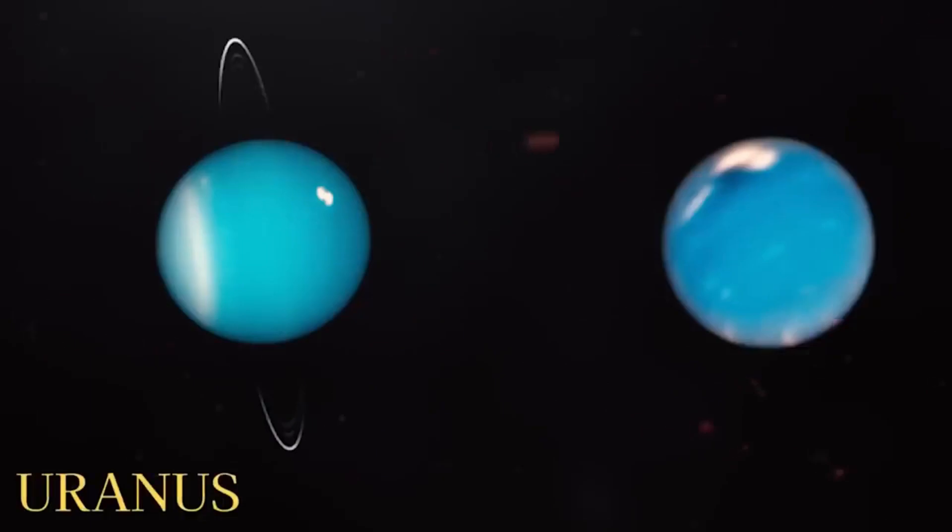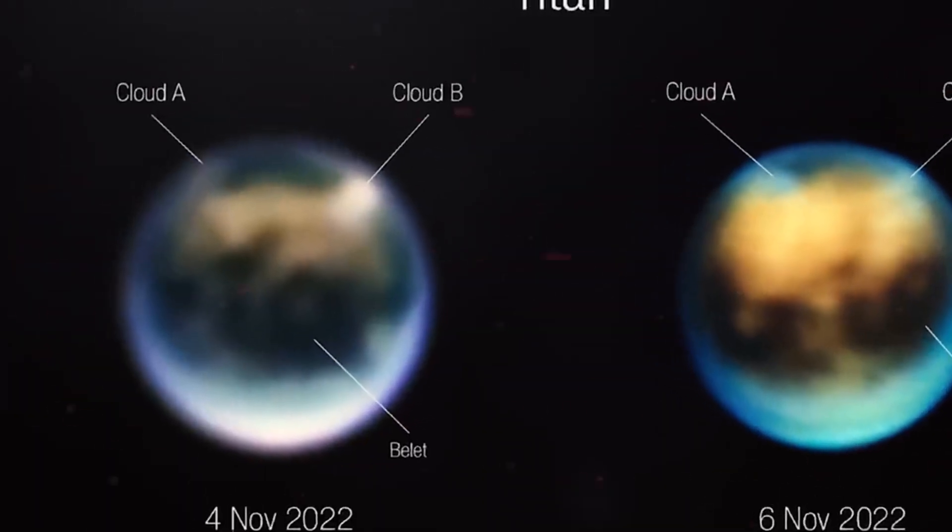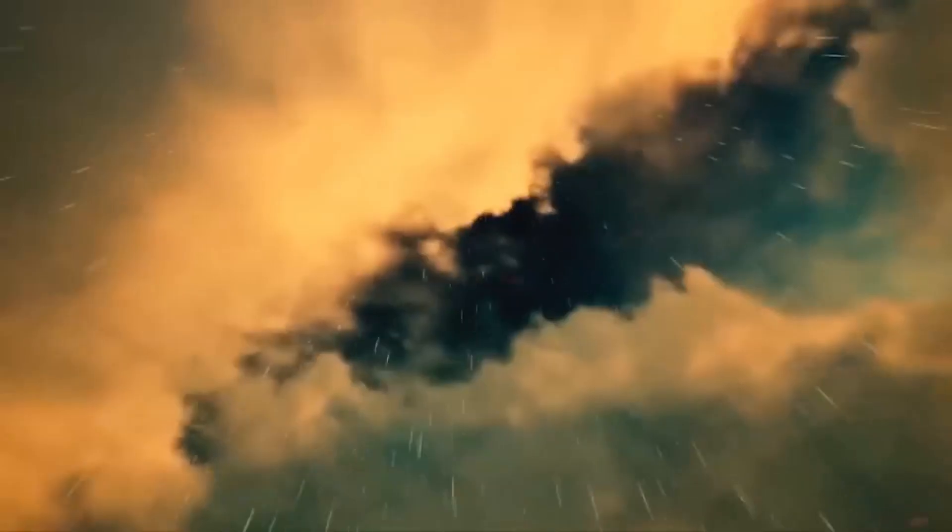From planets that rain sand to distant galaxies, James Webb is filling in a mysterious gap in our knowledge about the first 400 million years after the Big Bang, as well as providing clues to the existence of life forms elsewhere in the universe.